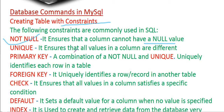The next constraint is UNIQUE, which means every value in a column must be different — every record will be different. Data repetition or data redundancy will not be stored. For example, if a mobile number already exists in the database, you will receive a message saying the record already exists.